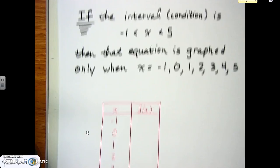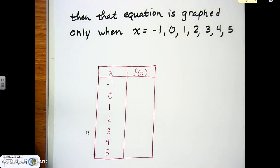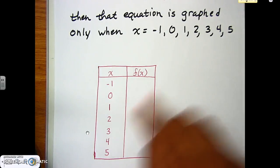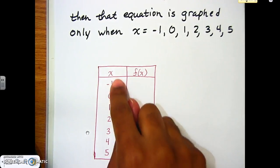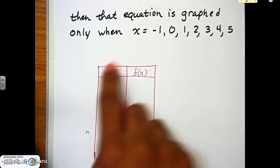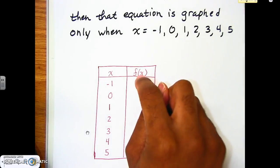This is what we're going to look at for our table: x values are on the left side, and f(x) or y values are on the right side. We're going to substitute these x values—from -1 to 5—into the equation to find our y values.